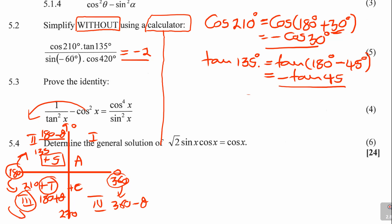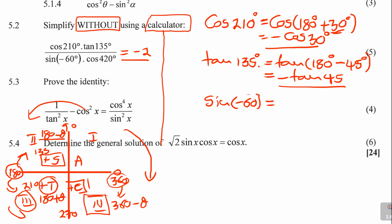Next one is sine negative 60. Negative angles mustn't trick you. When we talk about negative angles, you are changing rotation — moving clockwise instead of anti-clockwise. The first place you land is quadrant 4. In quadrant 4, only cos is positive, so sine is negative. Since we are in the fourth quadrant, this becomes negative sine 60. Since 60 is smaller than 90, we can leave it like that. If it was above 90, we would need to further reduce it.